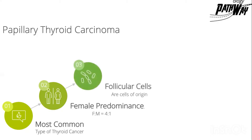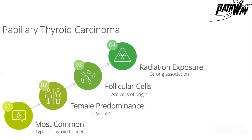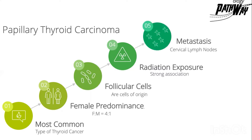Number three, it arises from the follicular cells. Number four, patients usually have radiation exposure. Number five, at the time of diagnosis, 50% of patients have metastasis to the cervical lymph nodes.